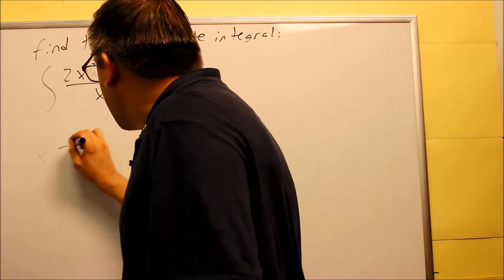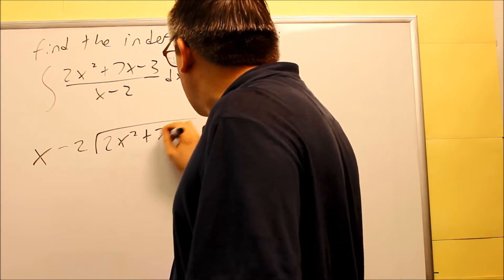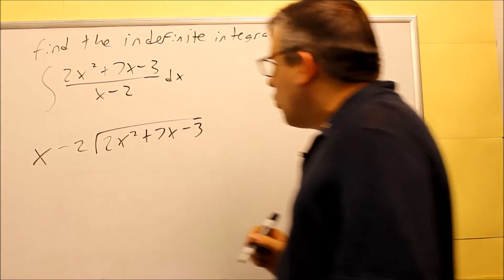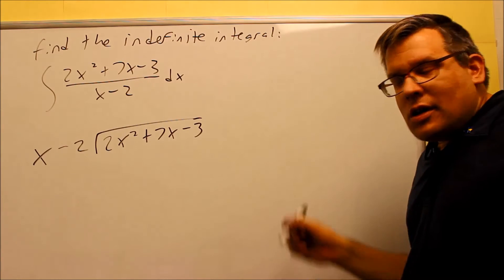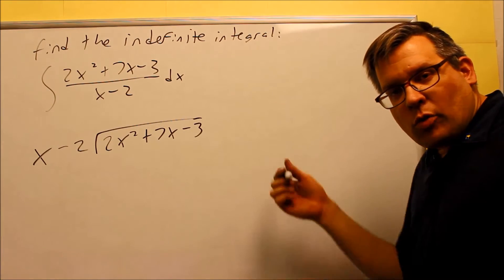So here's how you're going to set that up. You're going to put x minus 2 on the outside, 2x squared plus 7x minus 3 will go there on the inside. So I'm going to review all this since it may have been a while since you've worked with these kind of problems.